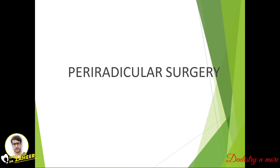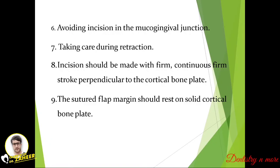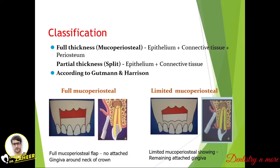Peri-radicular surgery mostly involves a flap procedure, so first we need to learn the principles of flap design. The base of the flap should be wider than the free end, avoiding incision over a bony defect. Include the full extent of the lesion, avoid sharp corners, avoid incision across a bony eminence, and avoid incision in the mucogingival junction. Take care during retraction; incision should be made with a firm, continuous stroke perpendicular to the cortical plate. The sutured flap margin should rest on solid cortical bone plate.